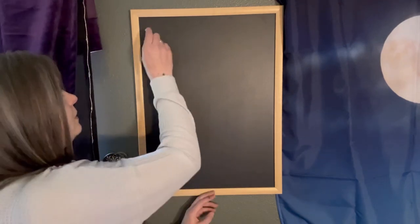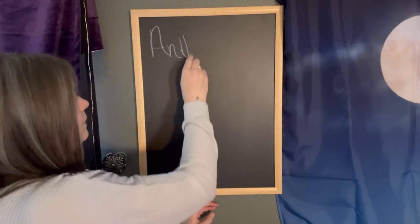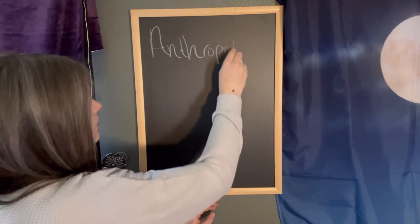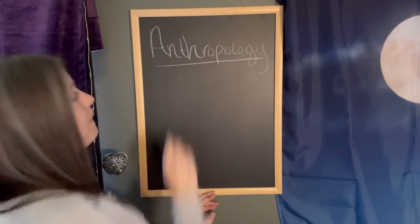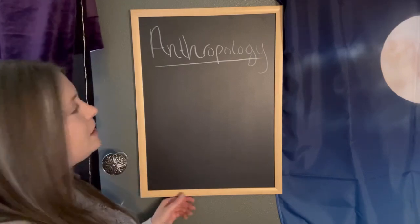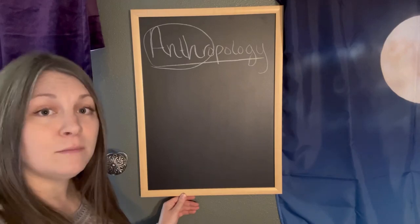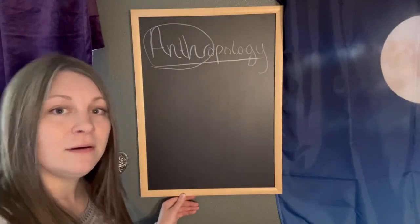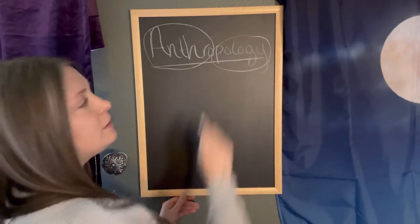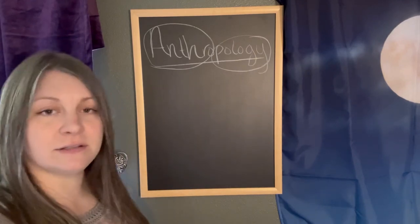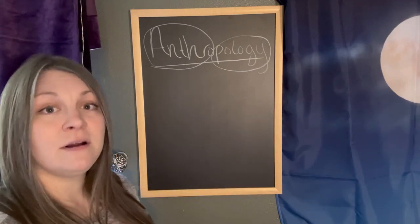Today we're going to begin with the actual word, anthropology. I'm going to break it down — what does it mean? And then we're going to go into the subfields of anthropology. So, what does anthropology mean? Well, 'anthro' means humans — people, it really just means homo sapien sapien, us. And the word 'ology' actually means the study of. So the word anthropology means the study of humans.